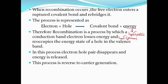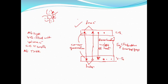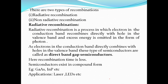When electron recombines with hole, this recombination takes place in two ways: one is radiative recombination, and the second one is non-radiative recombination. So there are two types of recombinations.